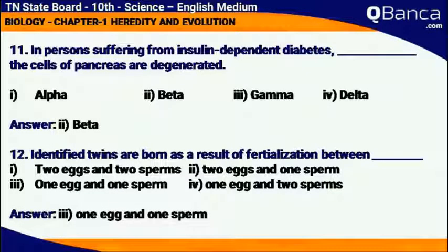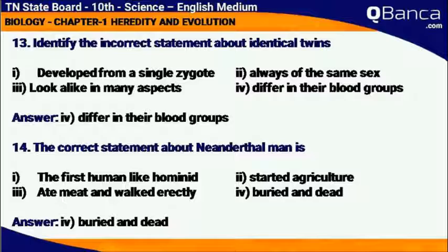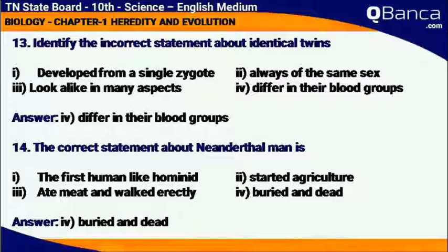Identical twins are born as a result of fertilization between one egg and one sperm. Identify the incorrect statement about identical twins. A: developed from a single zygote. B: always of the same sex. C: look alike in many aspects. D: differ in their blood group. Answer: D.